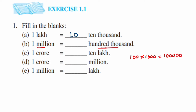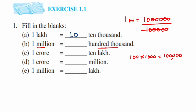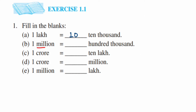One million equals ten lakh, which has six zeros. Dividing ten lakh by one lakh (hundred thousand, five zeros), we cancel five zeros from denominator and five from numerator, leaving ten. So one million equals ten hundred thousands — answer is ten.